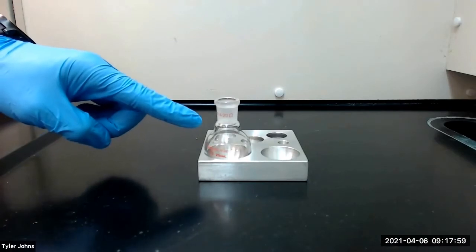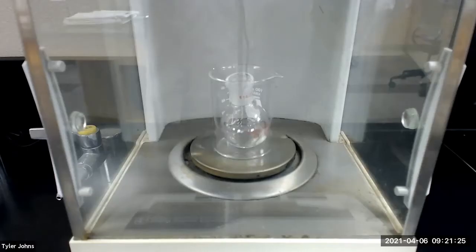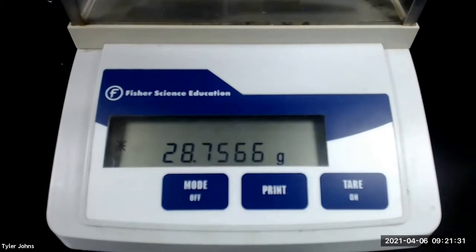Let's get started. We will begin by pre-weighing a 25-milliliter round bottom flask. The mass of the pre-weighed 25-milliliter round bottom flask is 28.7566 grams.